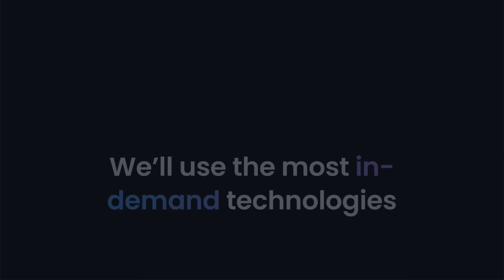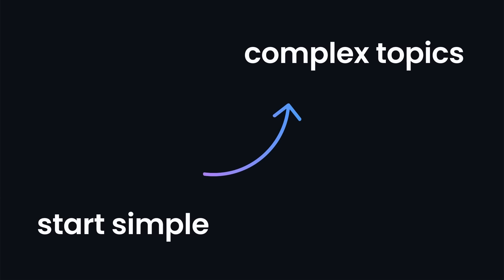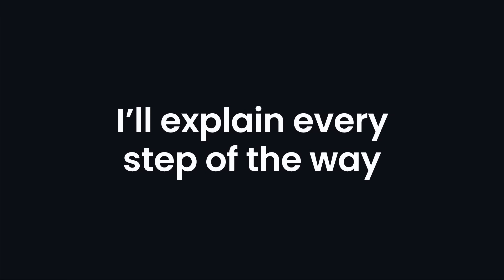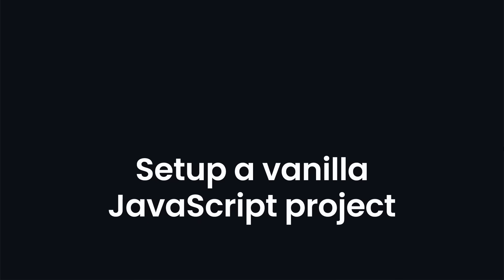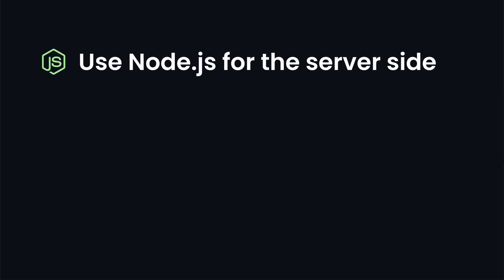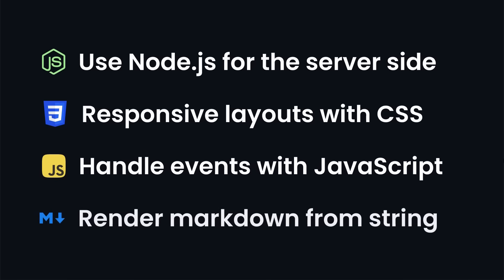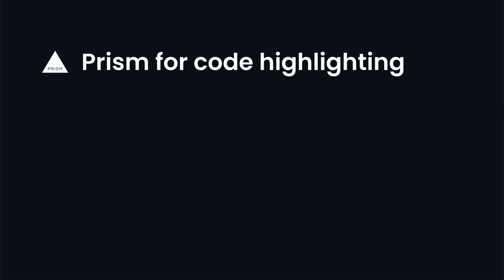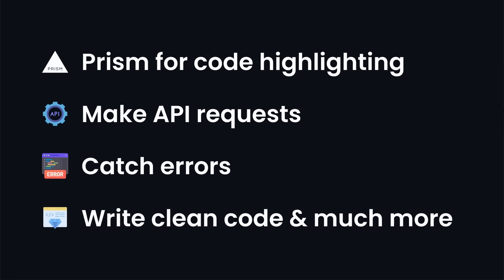We'll use the most in-demand technologies today such as HTML, CSS, JavaScript, Vite, Node.js, and of course, OpenAI. We're going to start simple and then move to more complex topics as we go. I'll explain every step of the way. Alongside building this application, you'll also learn how to set up a vanilla JavaScript project using Vite, use Node.js for the server side, create responsive layouts with pure CSS, handle events with JavaScript, render markdown from strings, use Prisma for code highlighting, make API requests, catch errors, write clean code, and much more.